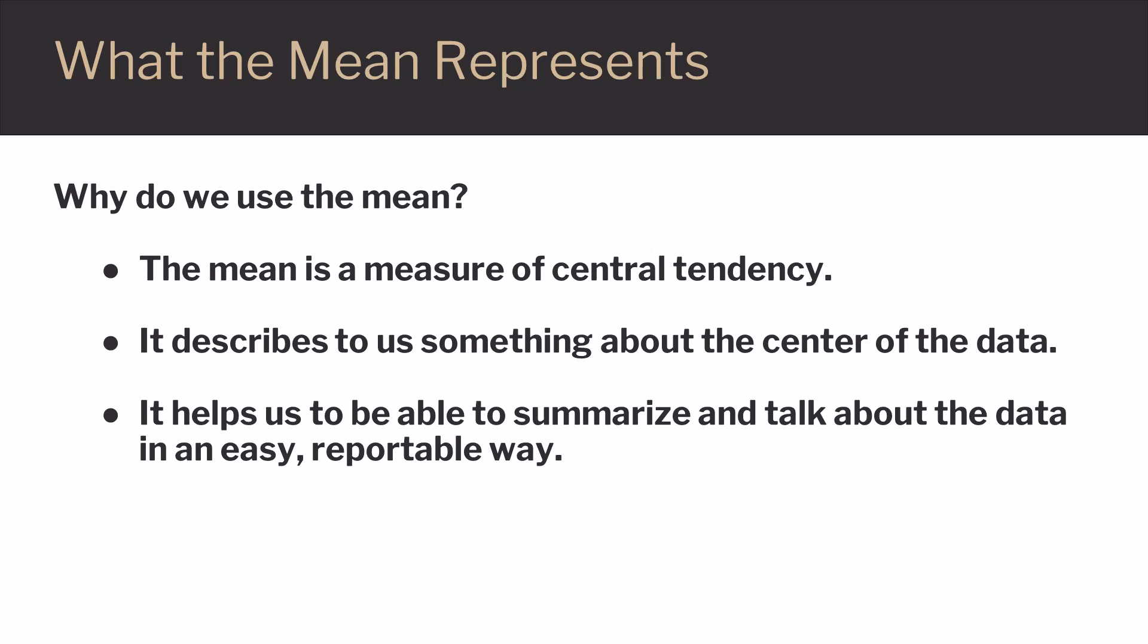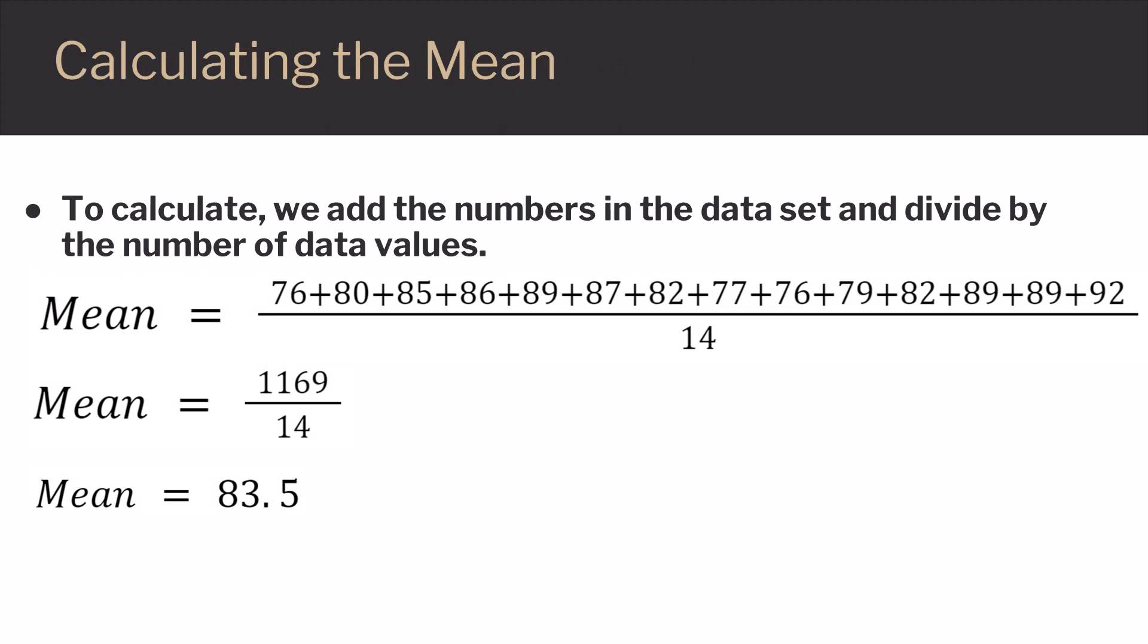Let's take a look at the example we just calculated. Does the mean seem to be closer to a center value in the spread of the data? Well, let's look. Here's the spread of data, and the mean was 83.5. Notice that the low was 76, and the high was 92.